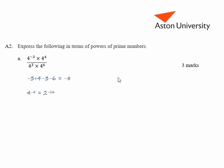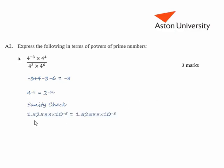For a sanity check, probably the easiest thing to do is to enter all of these numbers into a calculator as they stand, and also enter two to the minus sixteen into a calculator. If we do that we get a value of one point five five times ten to the minus five from both expressions. So we can be reasonably confident that our answer is correct.